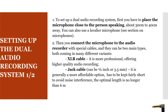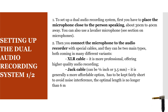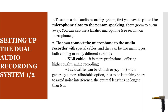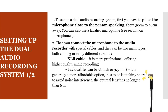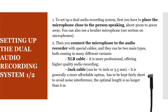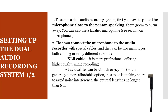Then you connect the microphone to the audio recorder. This is done with special cables, and they can be two main types, both coming in many different variants. First, XLR cable, which is more professional and offers higher quality audio recording. And second, jack cable, which is generally a more affordable option. Bear in mind that this cable has to be kept fairly short to avoid noise interference. The optimal length is no longer than 6 m, since it has to be long enough to allow you to place the sound recorder conveniently out of sight, away from the shooting area.